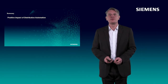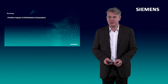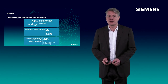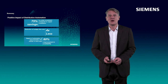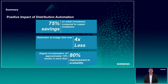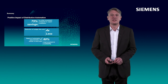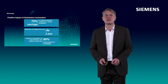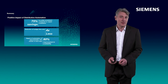Let's come to the summary. Distribution automation has a positive impact on the reliability and efficient operation of distribution grids. Impressive figures are measured in our pilot project combining distribution automation devices with the closed-loop application of the self-optimizing grid: 75% savings in comparison to the initial investment compared to copper installation, a reduction of outage time of more than four times, and a very impressive figure — a degree of automation of approximately 15% results in more than 80% improvement in availability. Thanks a lot for watching. That was my presentation.